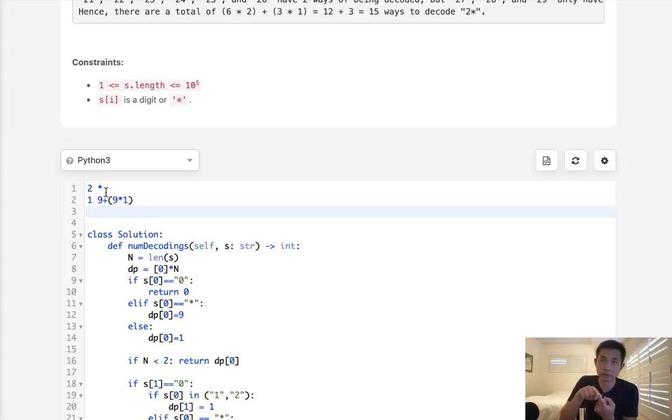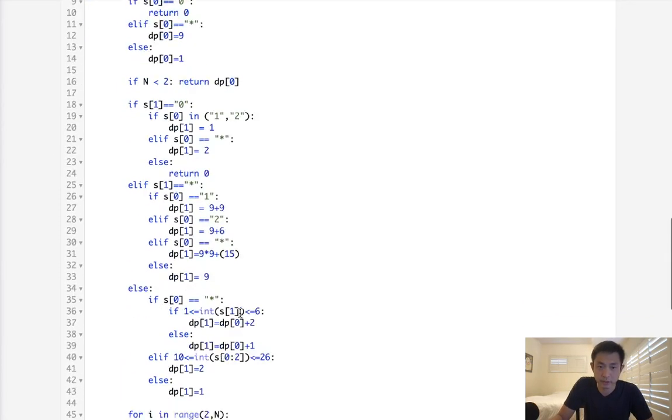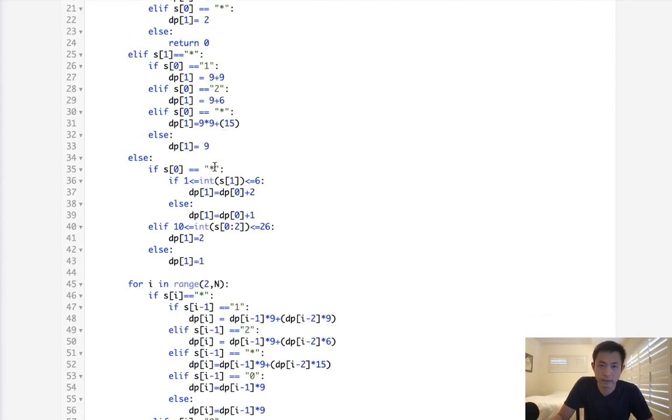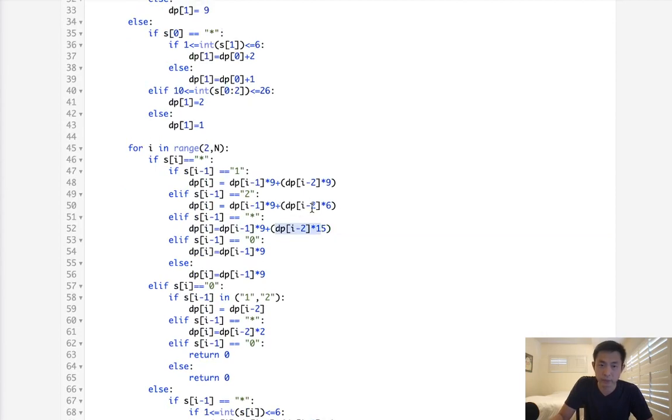So if this was a two, this would be actually six. There'd be six ways. Now things get even more complicated if there's like an extra star here. We have to actually keep track of both those two ways because we know one and two are both possible. So not only do we have to multiply whatever value we had here by nine, but now we have to also multiply the nine ways that we had. So 15 times nine plus 15 times six, I believe. And I put that somewhere here.